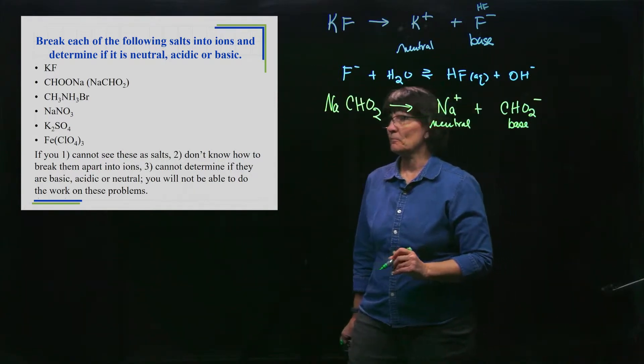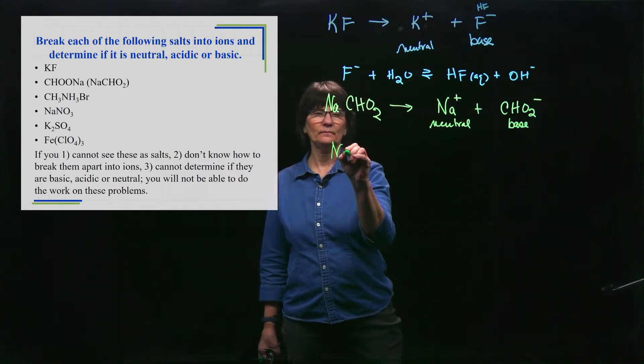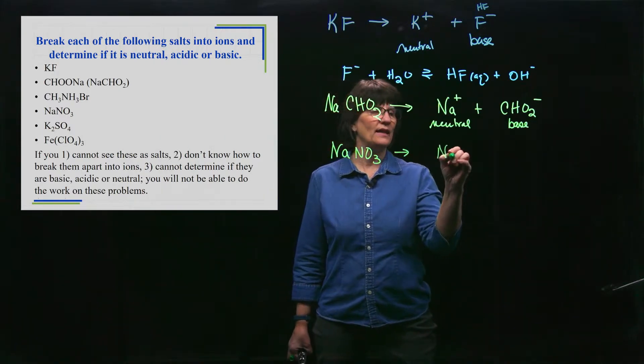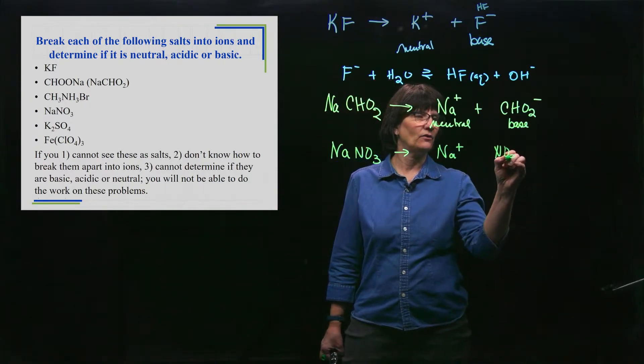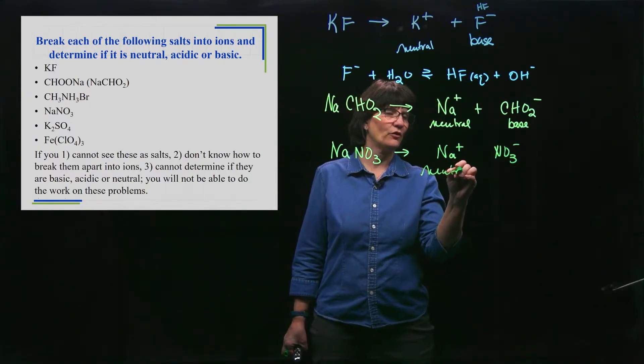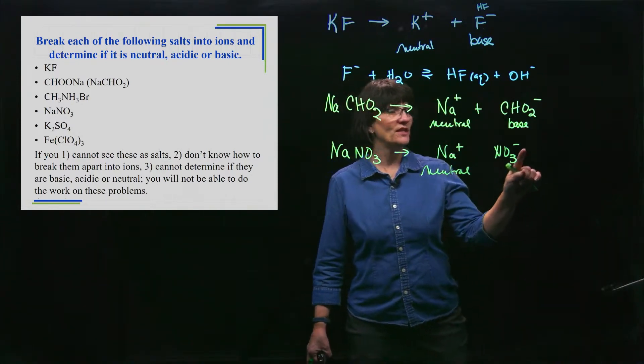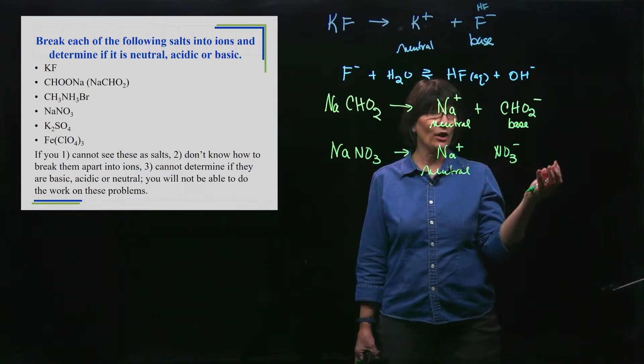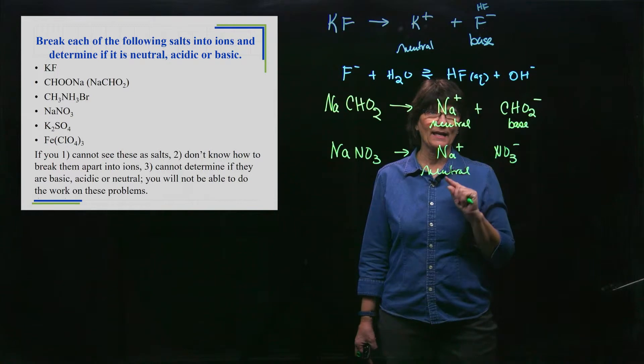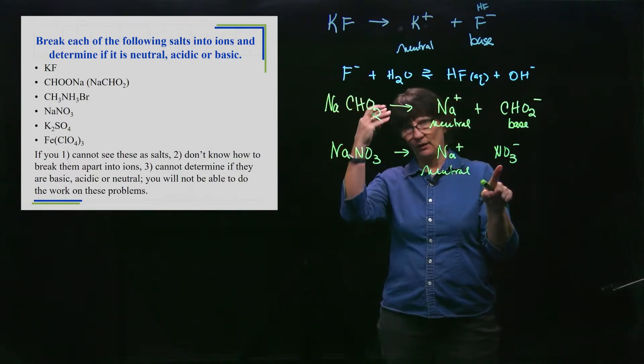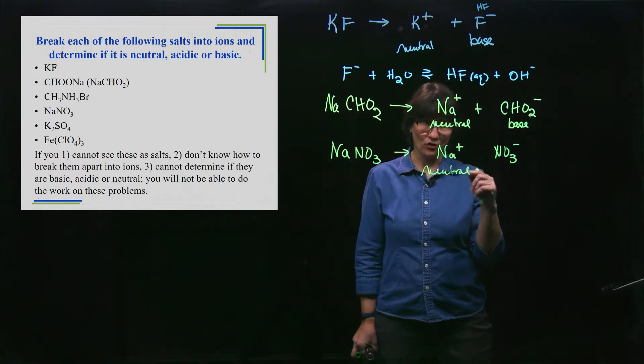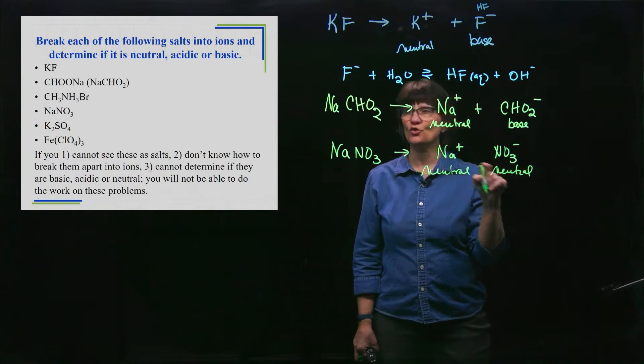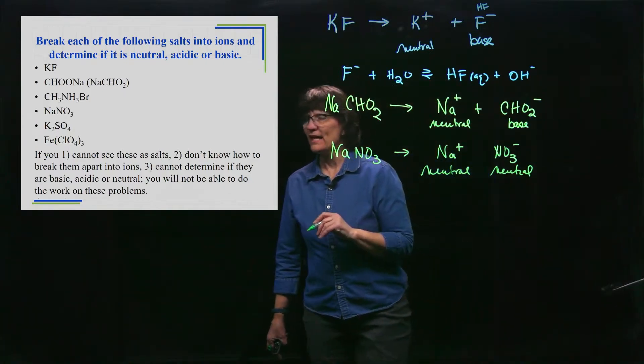NaNO3 - I see that cation, so I know it's a salt. It breaks apart into Na+ and NO3-. We've established and talked through that this is neutral many times. Here's the anion: if it accepted a proton - that's all anions can conceivably do, is take on an H+ - would it be on my strong acid list? HNO3 is on my list; yes, that's one of my strong acids. So it cannot accept that proton, and that makes it neutral. So this is a neutral salt.